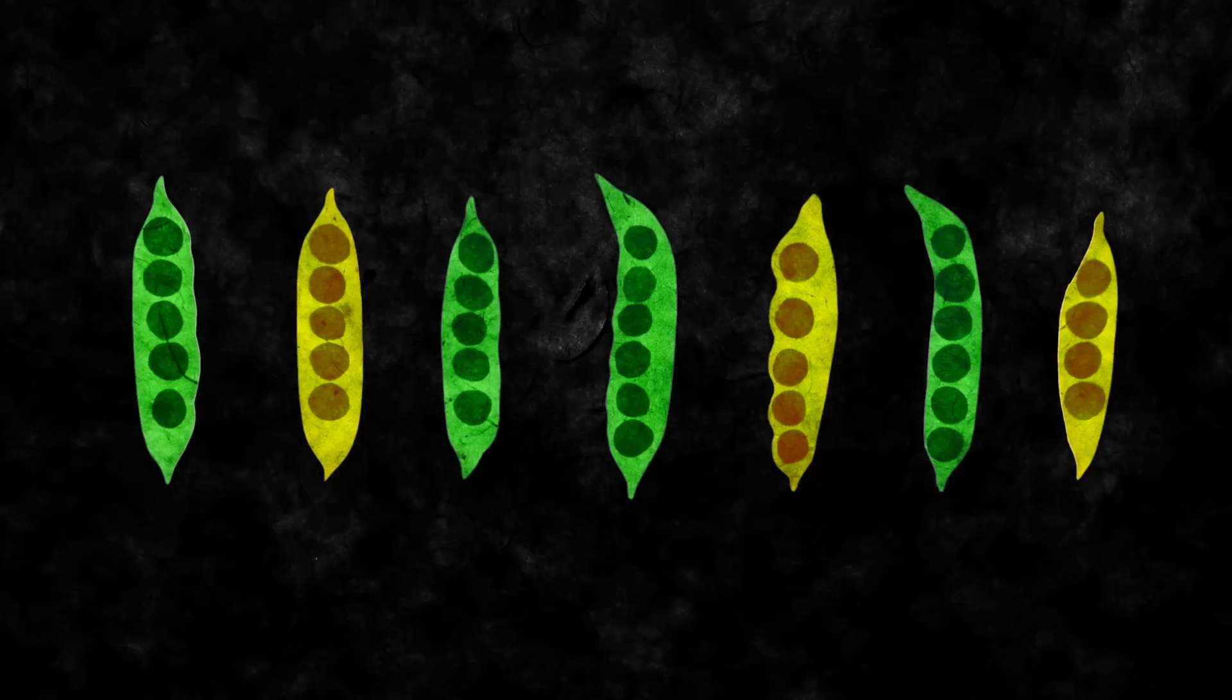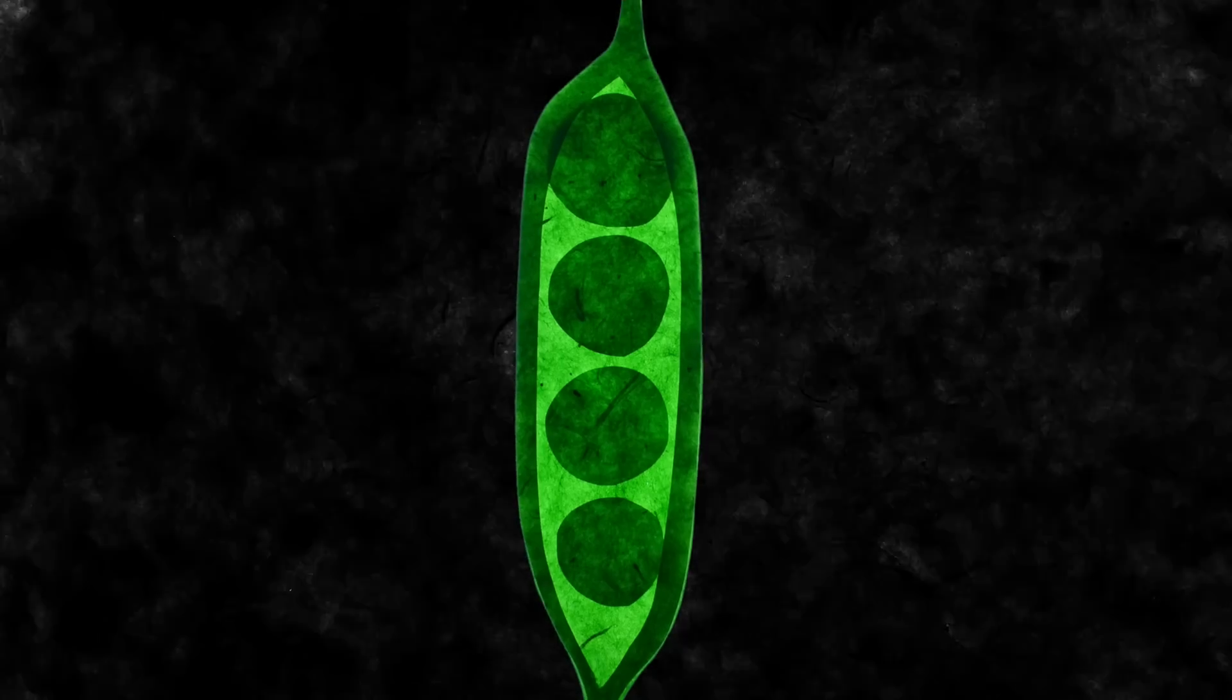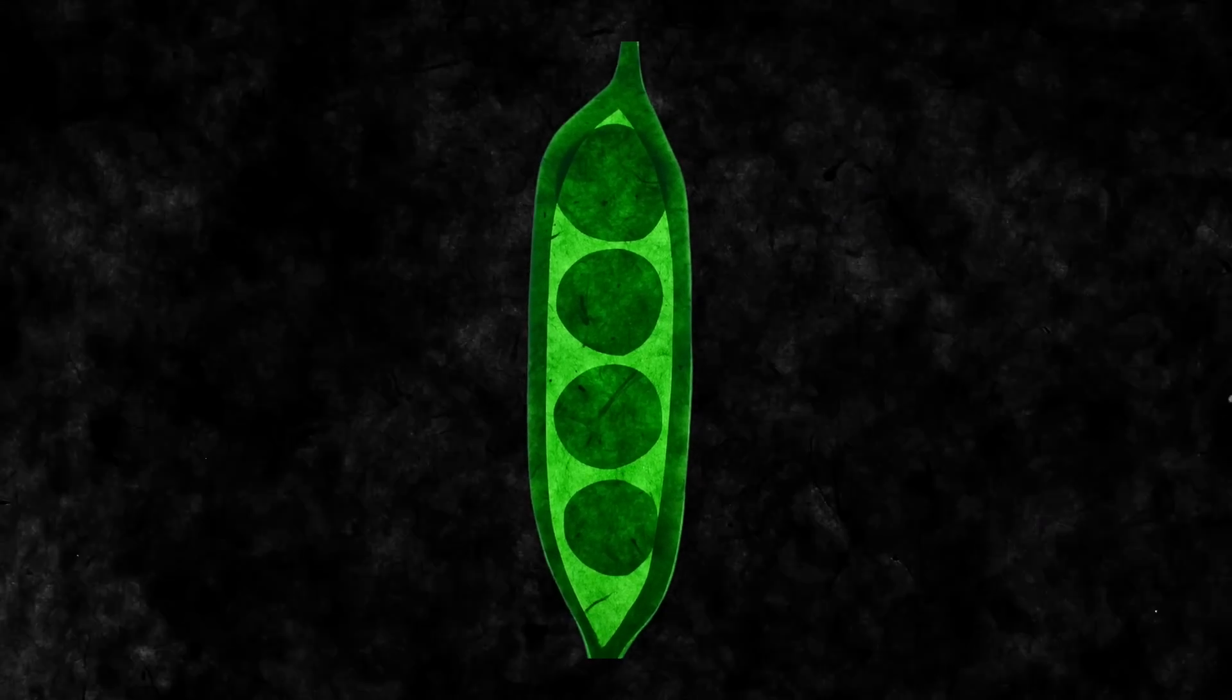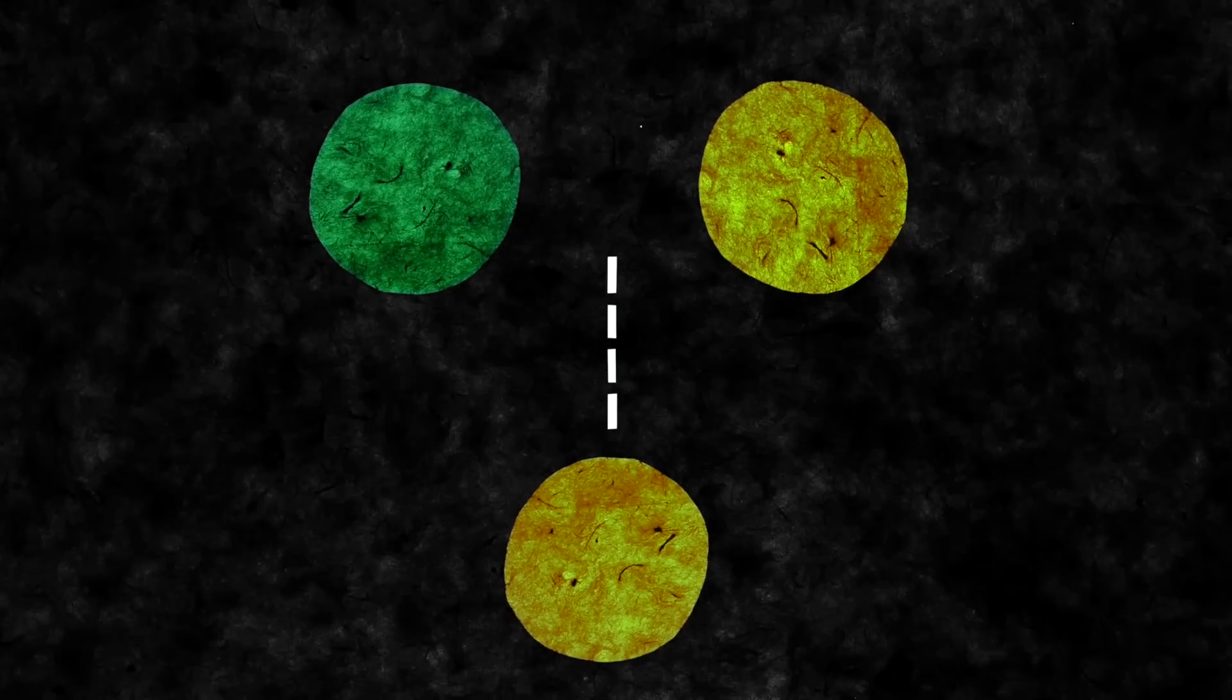One trait that he studied was the color of the seeds that the plants produced. He knew some plants produced only green seeds, while others produced only yellow. He started his experiments by cross-pollinating the two. He found that the first generation was all yellow. It appeared that the green peas were gone.